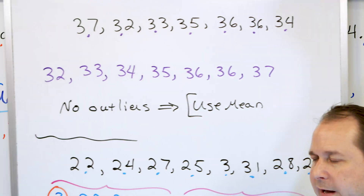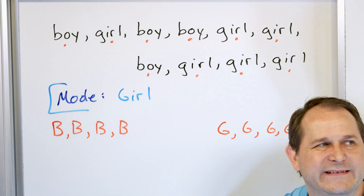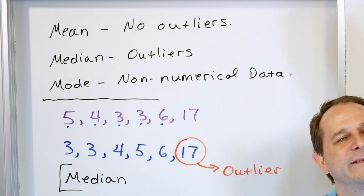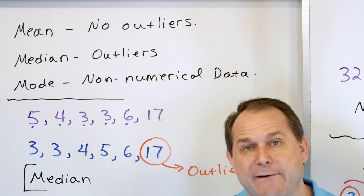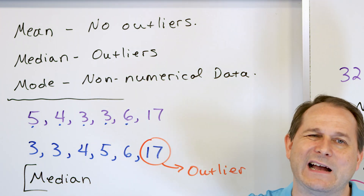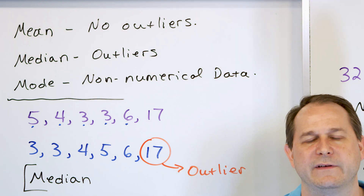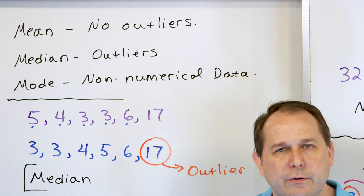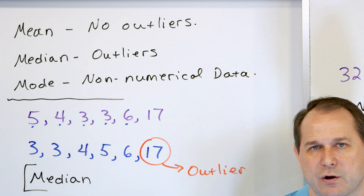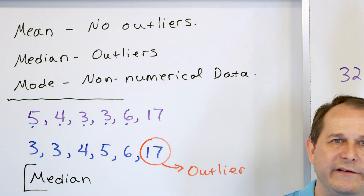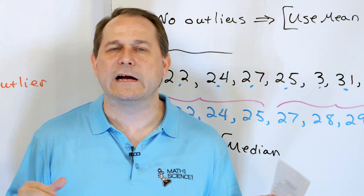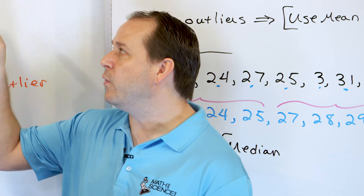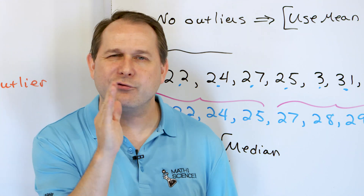So again, mean, median, and mode — three different ways of trying to figure out the center tendency or center value that represents the center of your data set. In general, we use the mean when we have good quality data all in a similar range with no crazy outliers. If we do have outliers, we use the median, because the way we find the median kind of discards the outliers and gives a better center value. Finally, we use the mode most often when we don't have any numerical data at all — like boys and girls, blue and pink, what's your favorite color — where we can't find numerical averages. Follow me on to the next lesson, where we'll wrap up the concept of when to use the mean, median, and mode.